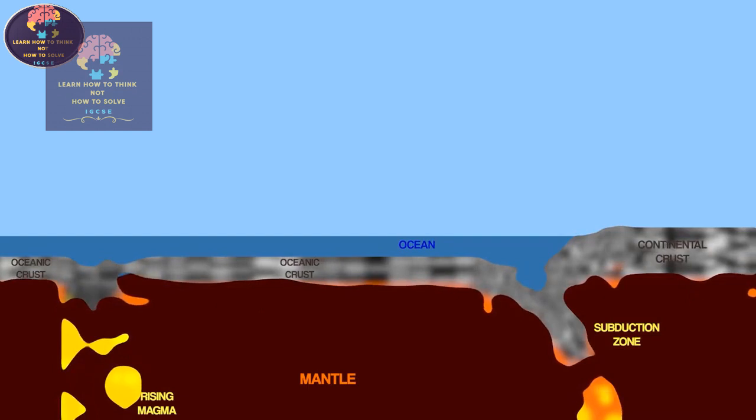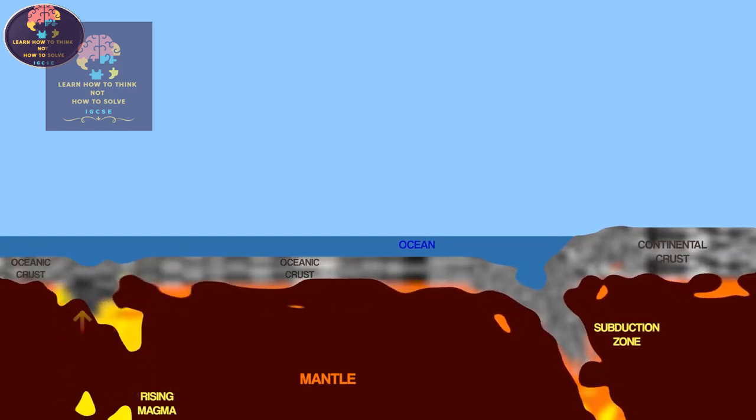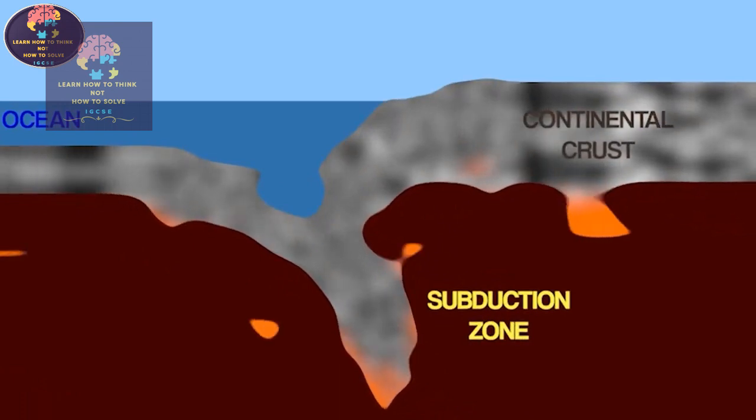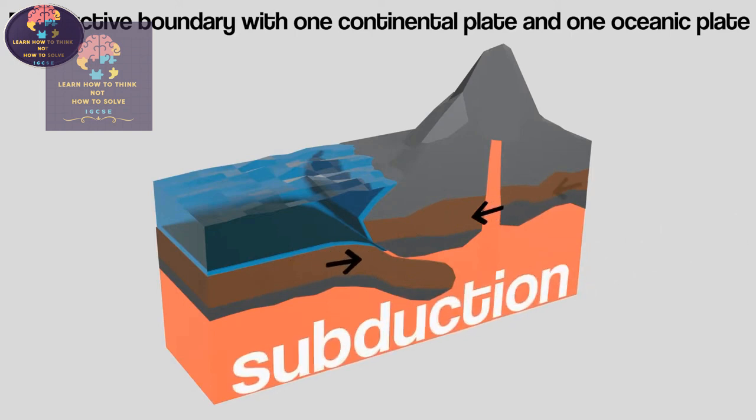Destructive, sometimes also called convergent boundaries, are areas where tectonic plates are being carried towards each other, but there are actually two different types. If an oceanic plate is moving towards a continental plate, the oceanic plate is forced underneath because it is denser, in a process we call subduction.